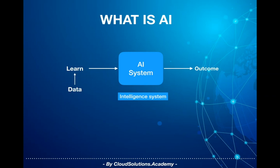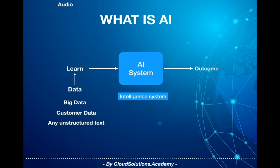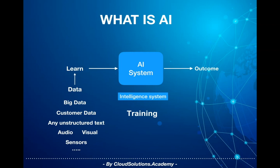Data can be big data, customer data, unstructured text like documents, audio, visual, or even environment surrounding details like information from connected devices. Based on the data provided, an AI system would learn and identify hidden patterns and provide an output.